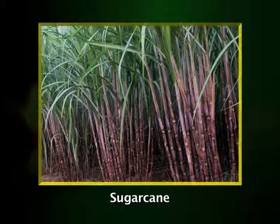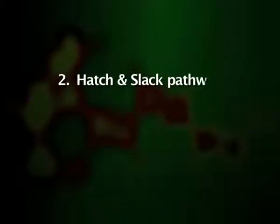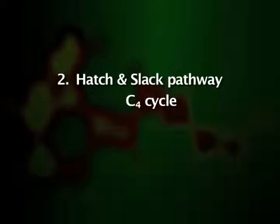However, in some tropical plants like sugarcane and maize, photorespiration does not occur at all. After the C3 cycle, let's discuss the C4 or Hatch and Slack pathway.